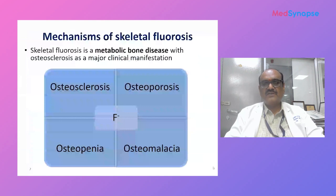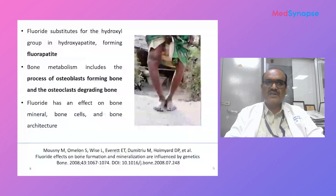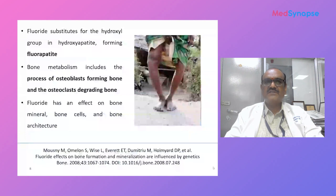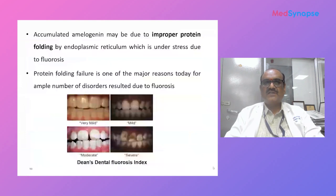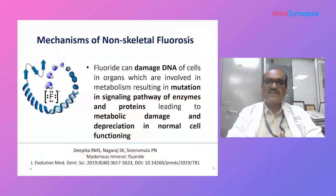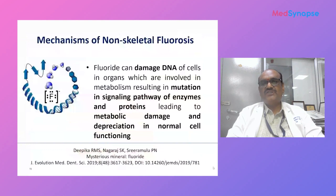These findings made it important for us to study the various impacts of fluorosis on non-skeletal, non-bone-related conditions. The mechanisms of dental fluorosis have been studied in depth — fluoride's action on proteinase enzymes inhibits the organic matrix synthesis of enamel, resulting in precipitation of amelogenin. Additionally, fluoride is known to damage the DNA of cells in organs involved in metabolism, resulting in mutations in signaling pathways of enzymes and proteins, leading to metabolic damage and depreciation in normal cell functioning.